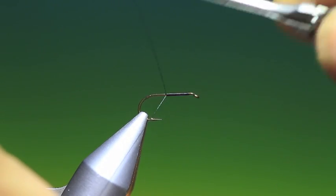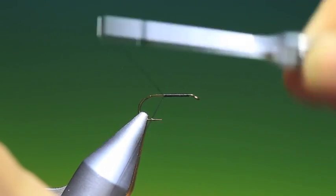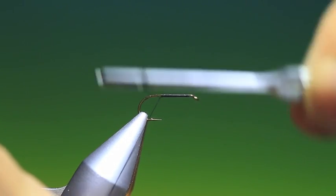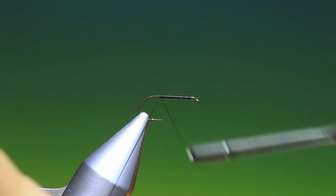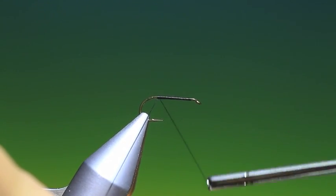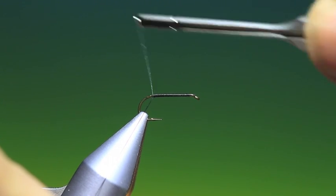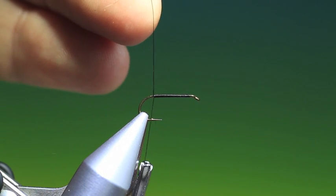So we want a foundation of tying thread all the way along the hook shank first because we're going to cover this with peacock herl. So we've got all the way back like so, get rid of that.